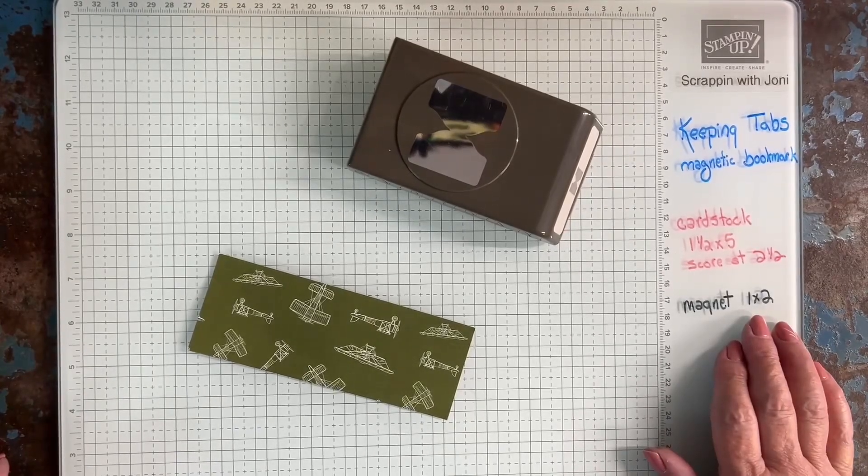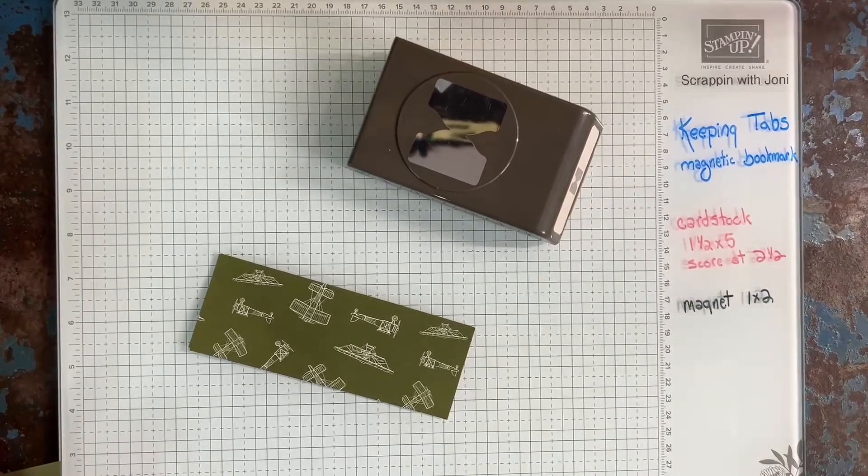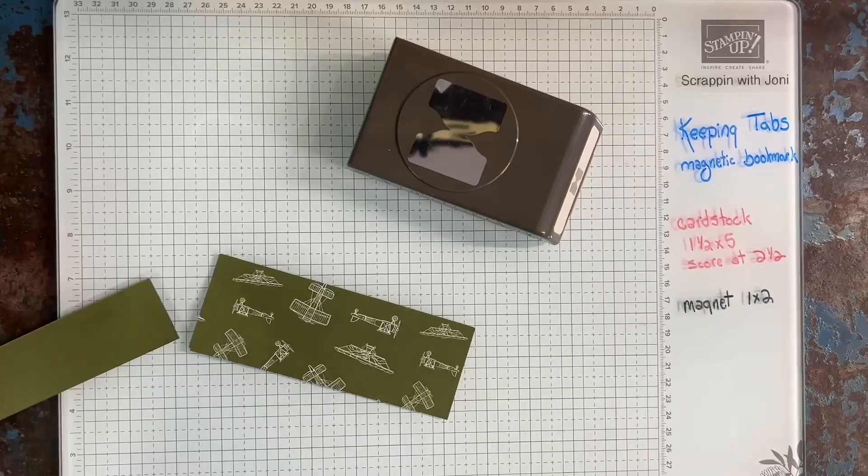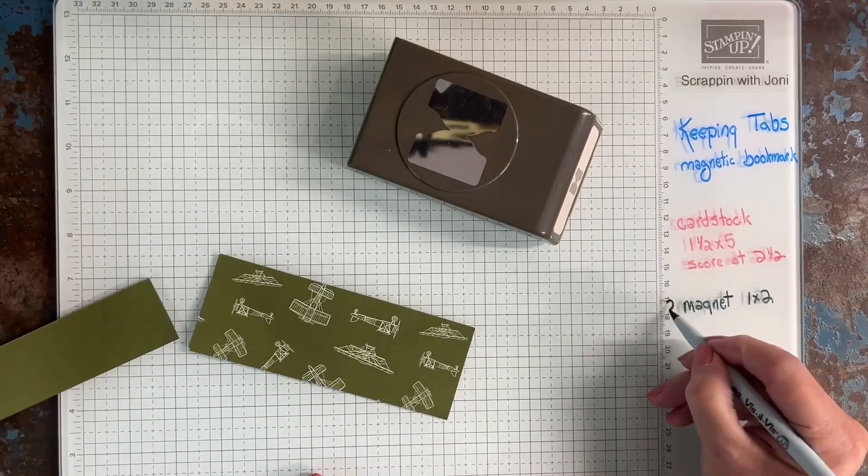And then you're going to need a magnet sheet. Actually, you're going to need two pieces of magnet sheets.